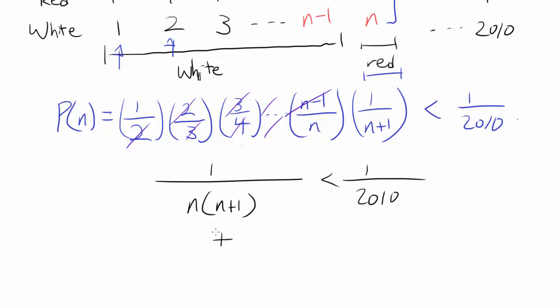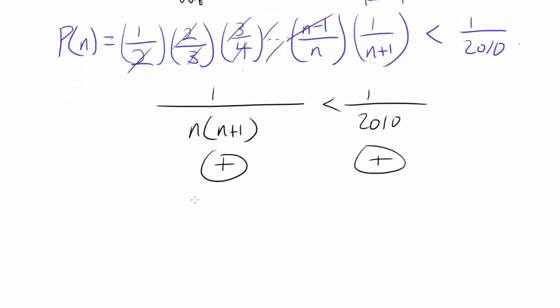Since this side is positive, because n is positive, and 1 over 2010 is positive, you can flip this inequality. When you flip an inequality when both sides are positive, you have to flip the sign. Consider 1/3 being less than 1/2, which is true. If you flip both of them, now you have 3 being greater than 2, so the sign has to be flipped.